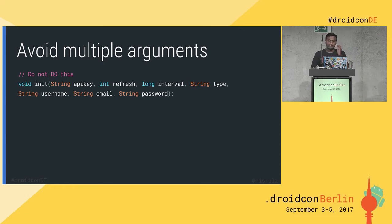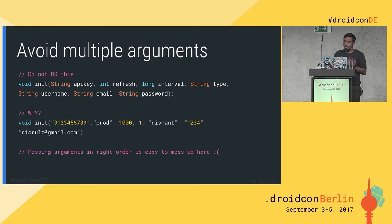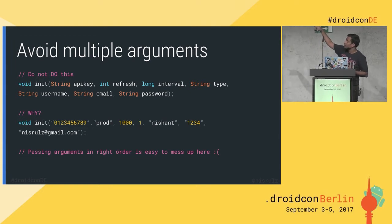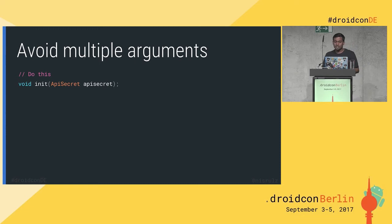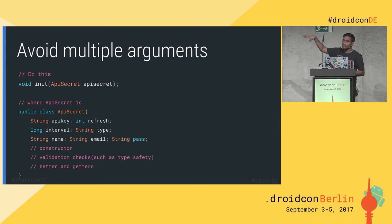Now I'm getting into more technical stuff — what you should not be doing versus what you should be doing. The first is: avoid multiple arguments. When a code line has multiple arguments, it's easy to mess up the order. In the example, the second argument should be an integer but it's a string — int refresh is now 'prod' as a string, which is very easy to mess up. What you should do instead is use an entity class, where you can put your validation checks. You have variables with setters, getters, and constructors.